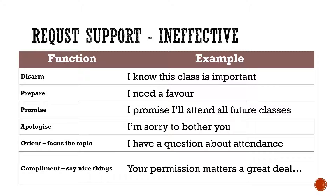Here are a few examples of request support which are ineffective. We can try to disarm the recipient and say 'I know this class is important,' or try to prepare the recipient and say 'I really need a favor.' We can make promises, we can apologize, or we can even butter them up by saying nice things about them. But none of these things are particularly effective and don't really affect your chances of getting what you want.